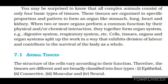Animal tissues: The structure of the cells varies according to their function. Therefore, the tissues are different and are broadly classified into four types: 1. epithelial, 2. connective, 3. muscular and 4. neural.